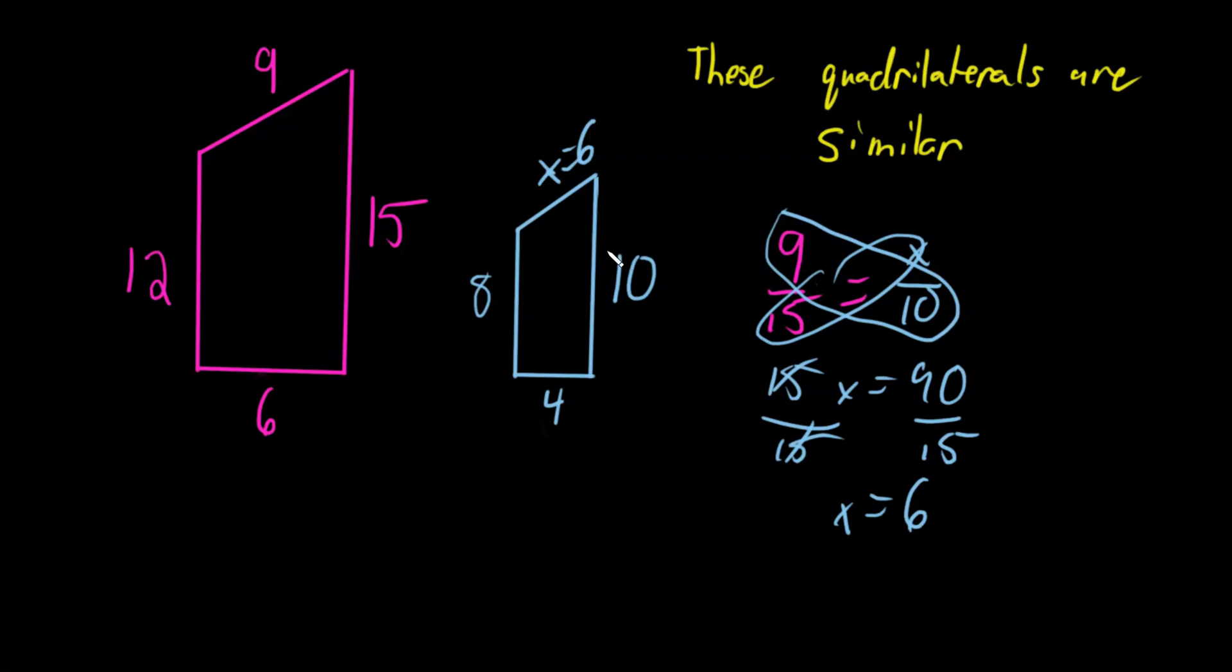We can look at what is the scale factor going from this pink quadrilateral to the blue one. So there is some constant value that takes 6 to 4 that is the same as that takes 12 to 8, and 15 to 10, and 9 to 6. So let's find out what that scale factor is. That constant is called a scale factor.